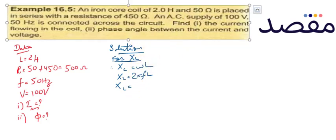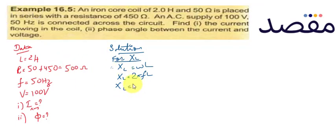It will be 2 pi times f value which is 50, and L is 2. So here we will get XL value, which will be 628 ohms.